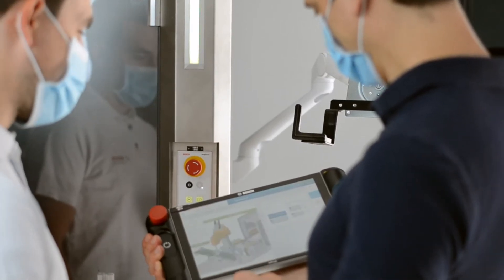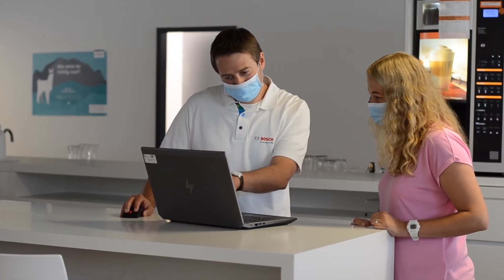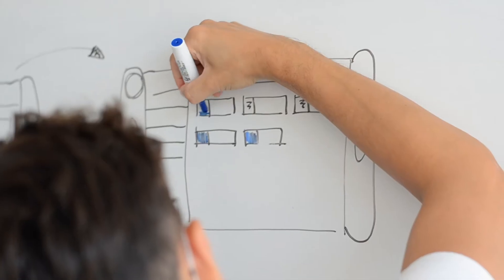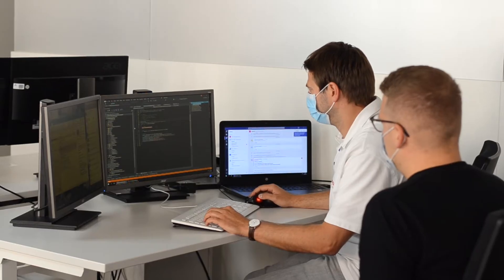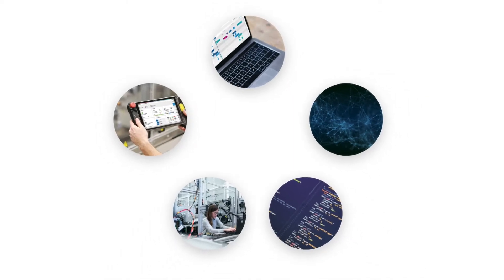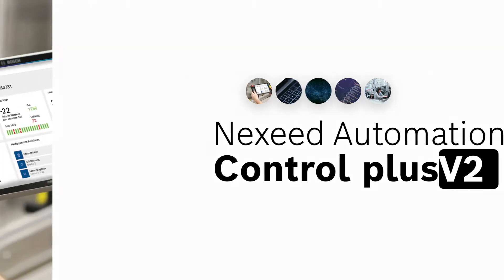For the past months we've been busy talking to operators, planners, programmers and service staff, asking them how we can bring machine controlling to the next level. Today we are more than happy to announce our biggest update so far: introducing NexSeed Automation Control Plus Version 2.